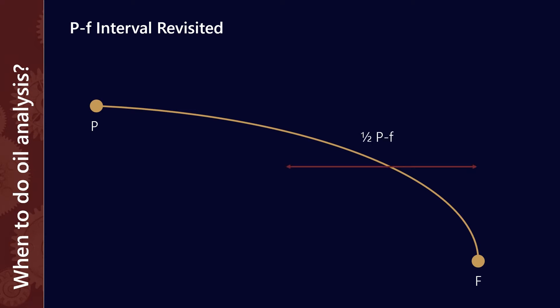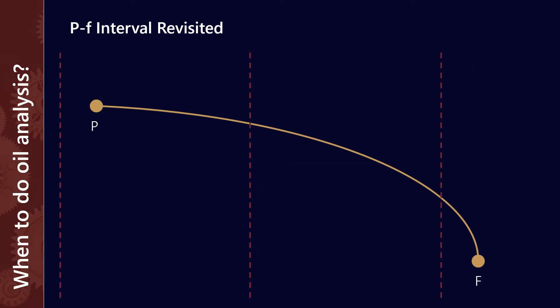Why is that the case? If we take half of this interval and sample at those regular points, half the P to F interval guarantees that 99.99% of the time we will actually be taking at least two samples between P and F. That gives us two opportunities to identify the problem P before it becomes a catastrophic failure F.